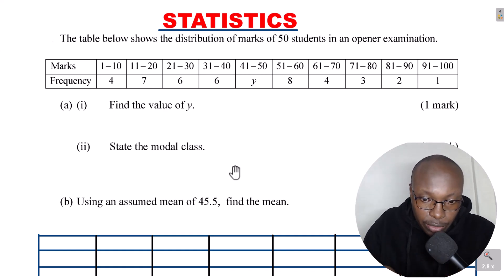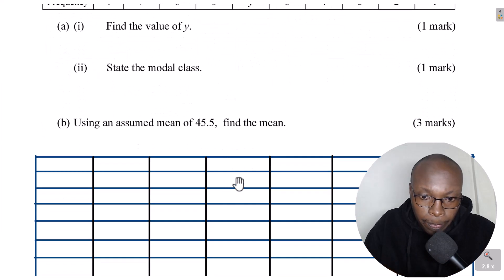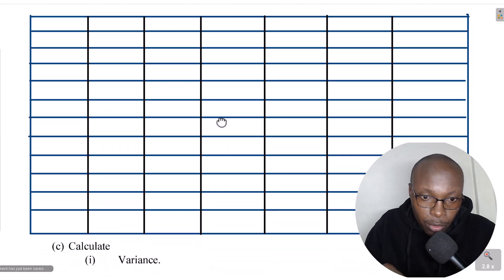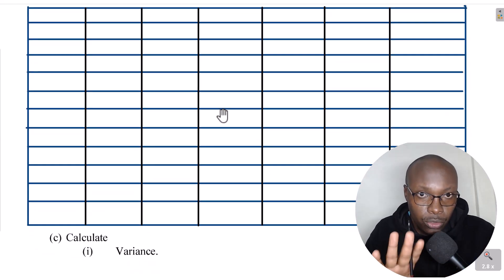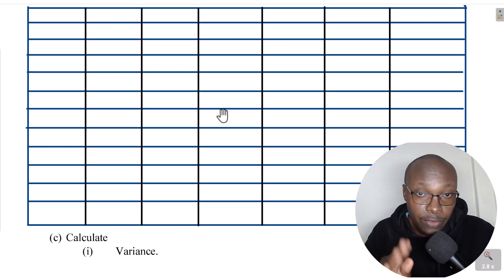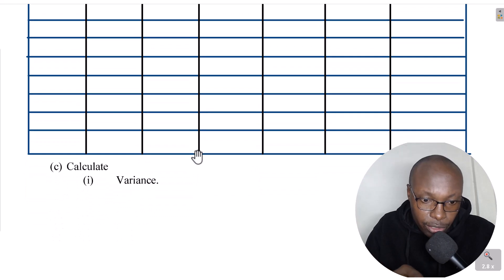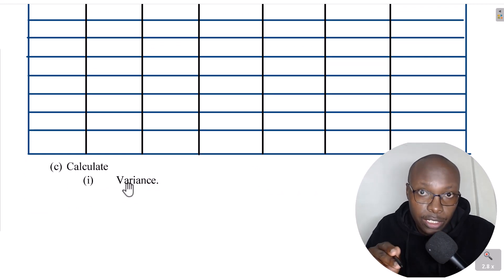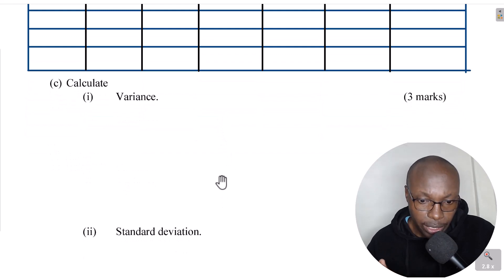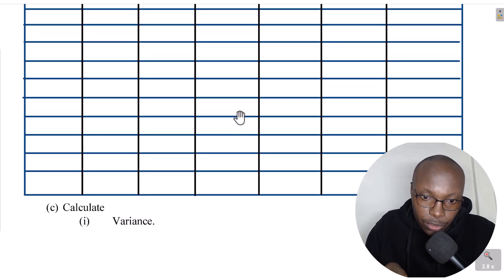We have the working table — I've prepared this to save time. There is also part C of the question: calculate the variance, that is part 1, and then part 2, the standard deviation. So those are the questions.